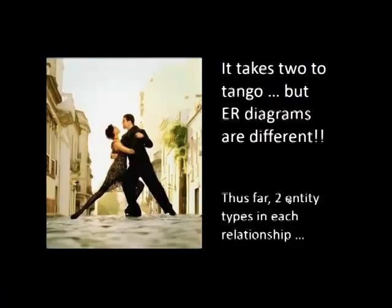So far we have been talking about only one kind of relationship: binary relationships, where every relationship has two entities connected. But conceptually that's not always the case — you could have relationships formed by a different number of entities than two.